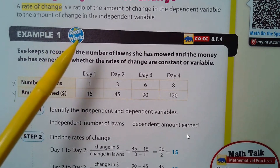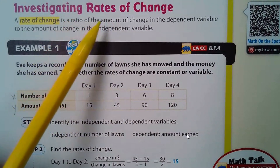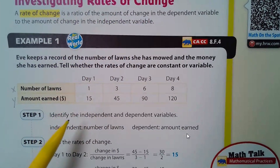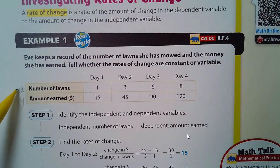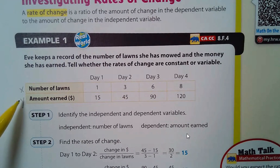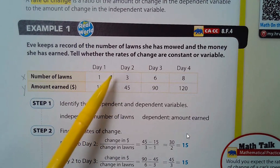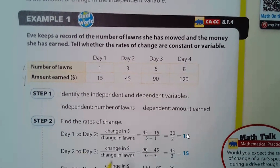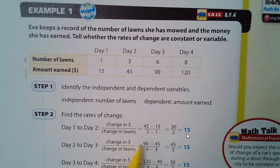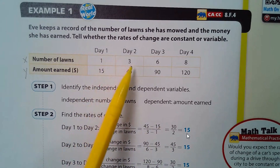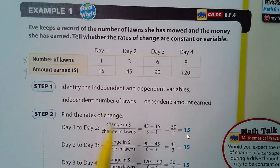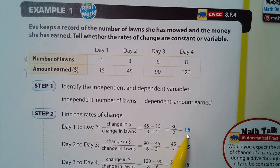Going back to the rate of change as a ratio: in our tables, the first row is the x values and the second row is the y values. So the rate of change will be the change in y over the change in x — the change in money divided by the change in lawns. The change in money is 45 minus 15, so 45 minus 15 divided by 3 minus 1, giving us 30 over 2, which is 15.